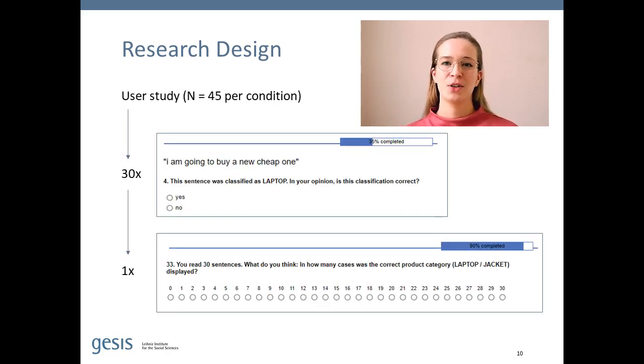As for the study procedure, we recruited over 200 participants, such that we have 45 participants in each condition. We confronted each participant with 30 predictions, you can see a screenshot here, and in the end we asked them how many predictions were correct in total, which then represents their perceived accuracy.